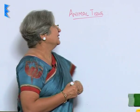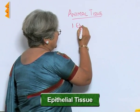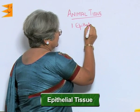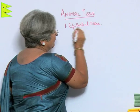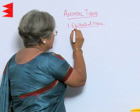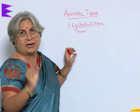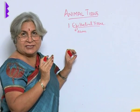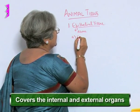The first type of tissue we are going to consider is the epithelial tissue. The word 'epi' means above, so this name has been taken from its location. 'Epi' means above, so this tissue is present above — it covers the internal and external organs.